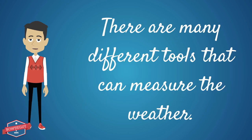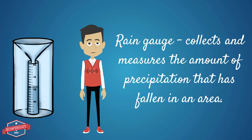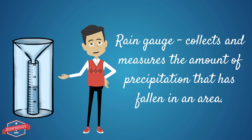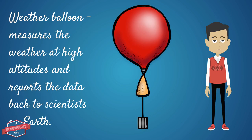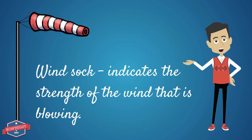In addition to the tools that we've already discussed, meteorologists use a variety of other tools to interpret the weather. A rain gauge measures the amount of precipitation that has fallen in a particular area. Weather balloons measure the weather in different altitudes. And a wind sock measures the strength of the wind that is blowing.